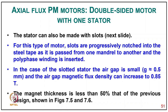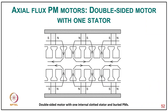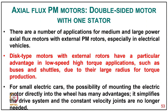In the case of a slotted stator, the air gap is small (equal to 0.5 mm) and the air gap magnetic flux density can increase to 0.85 T, and the magnet thickness is less than 50% of that in the slotless case. There are many applications for medium and large power axial flux motors with external PM rotors, especially in electric vehicles. This type of motor with external rotors has a particular advantage in low-speed, high-torque applications such as buses and shuttles, due to their large radius and torque production.